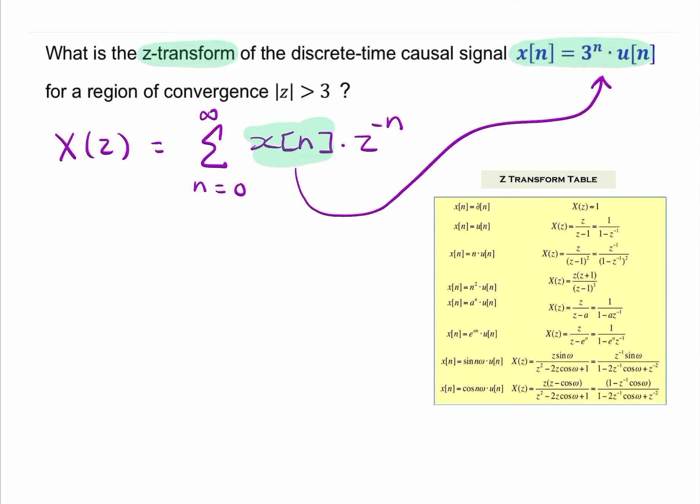So it would be the summation from n equals 0 to infinity, 3 to the power n, u of n, z to the minus n. Now u of n, that's simply equal to 1.